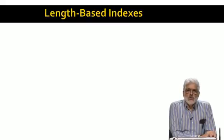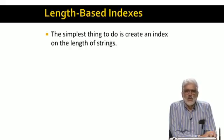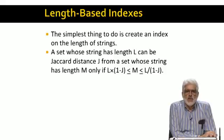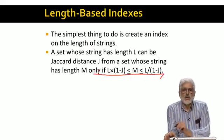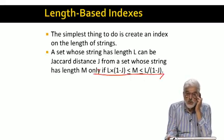We're going to go through a series of progressively more complicated forms of indexes to put on the strings that represent the sets. Our first and simplest approach is to index by length of the string only. That corresponds to indexing sets by their size. There is an important relationship between Jaccard distance and lengths of the strings that represent sets. If a set has size L, so its string has length L, then this set can be Jaccard distance J from a set of size M only if M lies between L times 1 minus J and L divided by 1 minus J. We'll justify this relationship on the next slide.